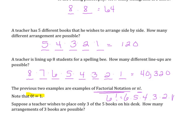Zero factorial is always equal to one. Now suppose a teacher wishes to place only three of the five books on his desk. How many arrangements of the three books are possible? We start off with five, go to four, then three books — but we don't need to rearrange anymore. So we can make 60 arrangements when we multiply them together. We don't have to go all the way down to one; we can stop depending upon what they're asking.